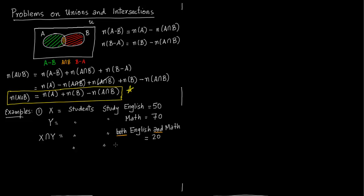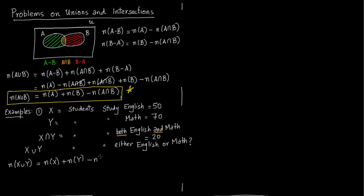We have to compute the number of students who study either English or math. When the word 'either... or' comes in, that means you are talking about unions — so we compute number of elements in X union Y. We just apply the above formula: n(X∪Y) = n(X) + n(Y) − n(X∩Y). Plugging in the values and computing, we get an answer of 100.